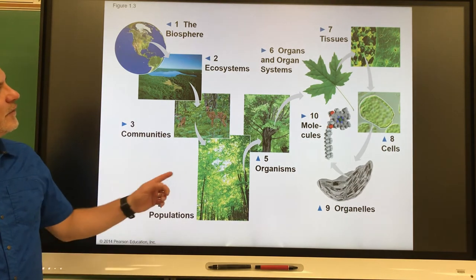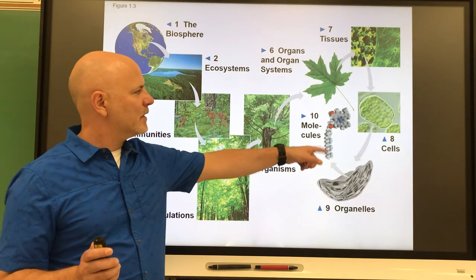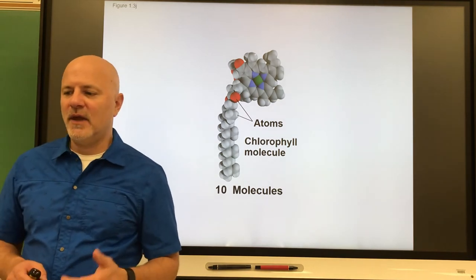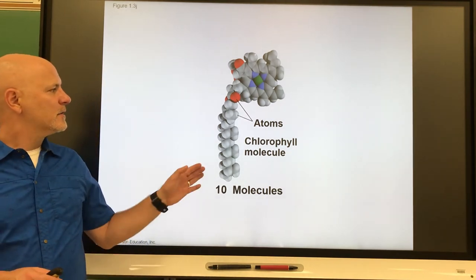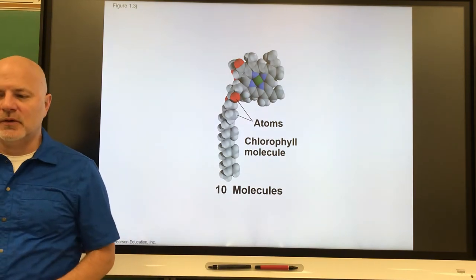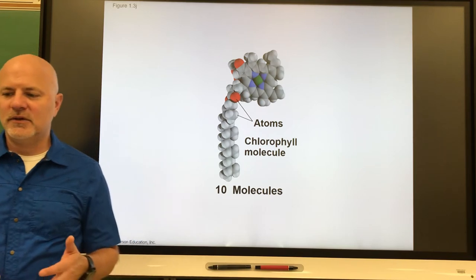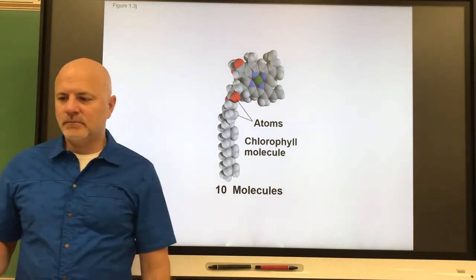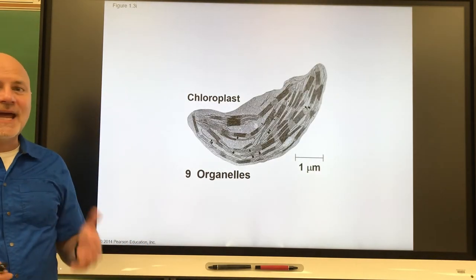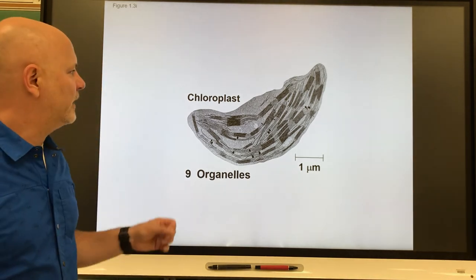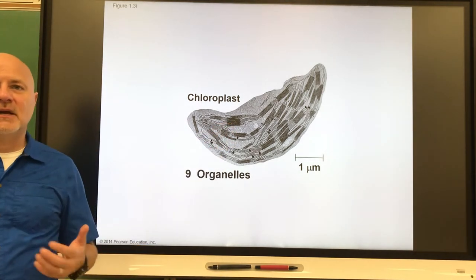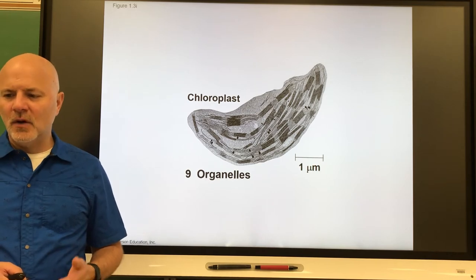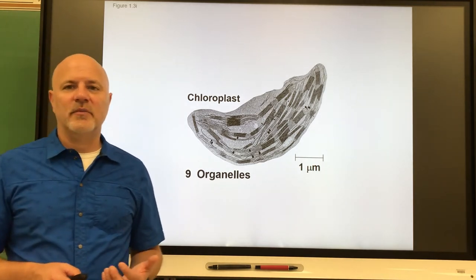Now let's look at levels of organization, starting from the smallest. The atomic level: an atom is the smallest unit of matter that retains the properties of an element. The molecular level: a molecule is a group of two or more atoms — shown here is a chlorophyll molecule. Above that is the organelle level — the chloroplast is an organelle found within plant cells where photosynthesis takes place. An organelle is a structure within a cell that performs a specific function.